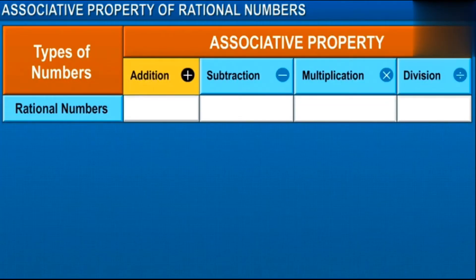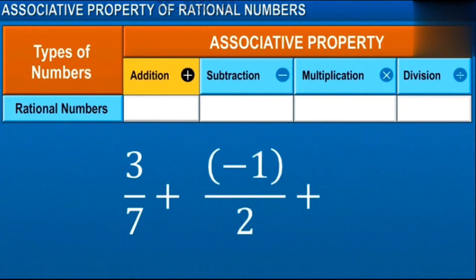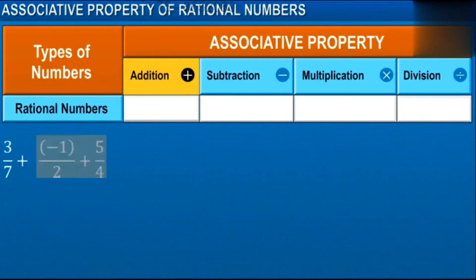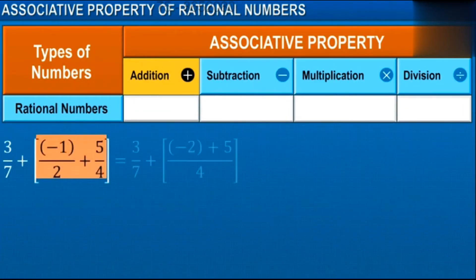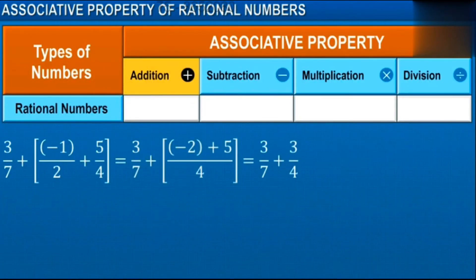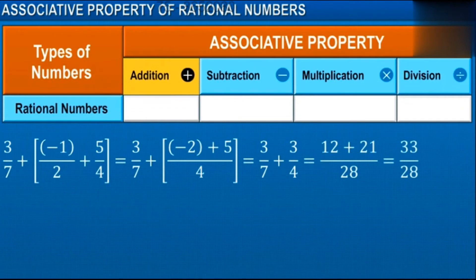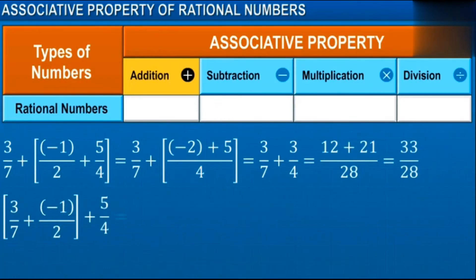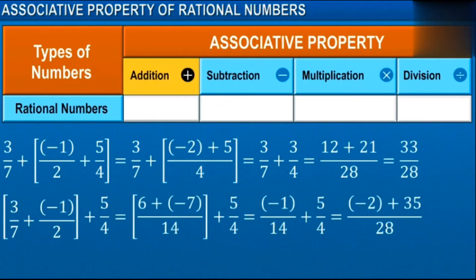Let's check the operations under which rational numbers are associative. Consider 3 rational numbers: 3 by 7, minus 1 by 2, and 5 by 4. On adding the last two numbers and then adding the sum to the first number, gives 33 upon 28. On adding the first two numbers first and then adding the sum to the last number also gives 33 upon 28.